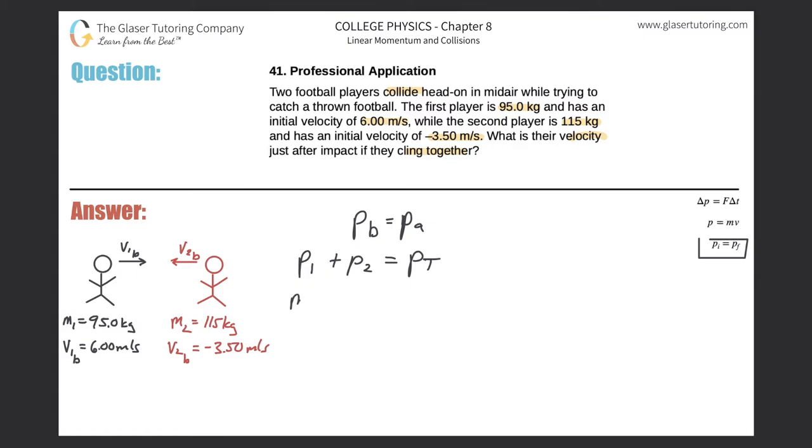Remember, momentum is mass multiplied by velocity. So therefore the momentum of the first player will equal his mass multiplied by that velocity before the collision, plus then the momentum of the second player, which is the mass of the second player multiplied by the velocity of that second player before the collision. And that will then equal the total mass multiplied by the final velocity since they act as now one unit.